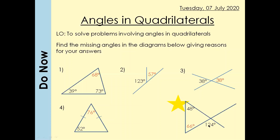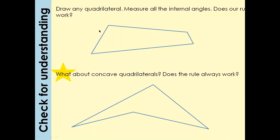We know this angle is 48°. Now we need to use a fact that students often get wrong in exams: the exterior angle of a triangle equals the sum of the two interior opposite angles. So here, 48° + 66° = 124°. That's the key fact to remember.